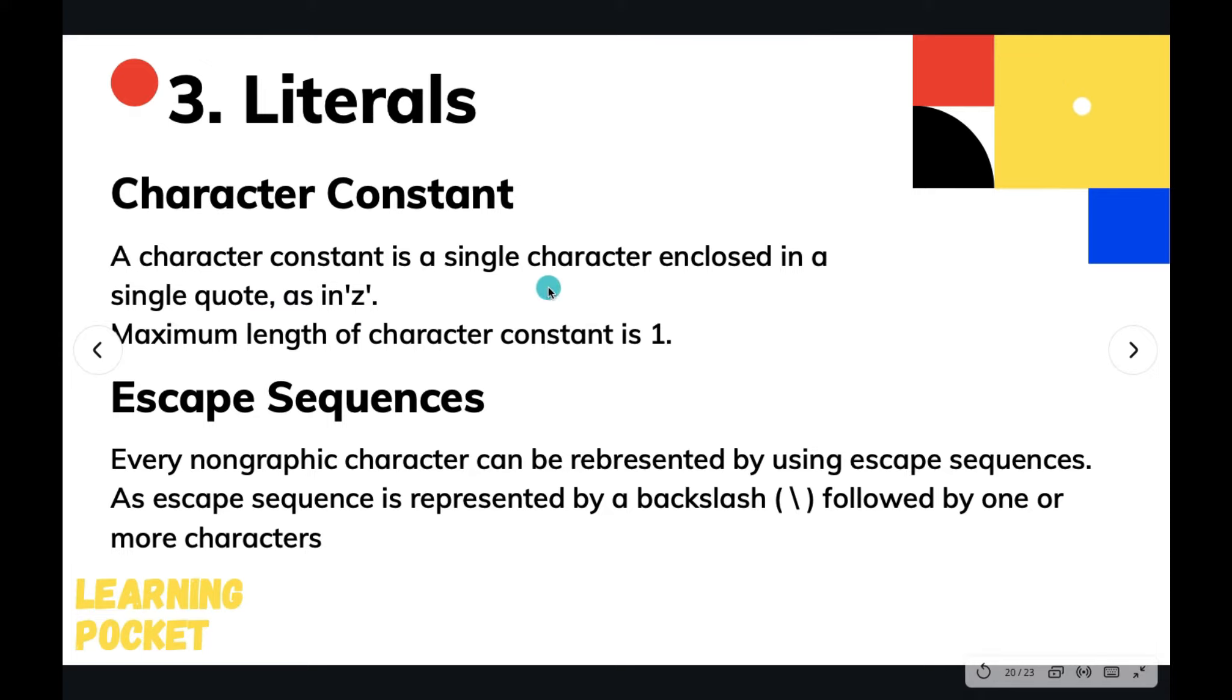For example, 'Z' in quotation marks would be a character constant. It is obvious that the maximum length of a character constant is one. You just need to have a letter or any character in single quotes and you will have your character constant.